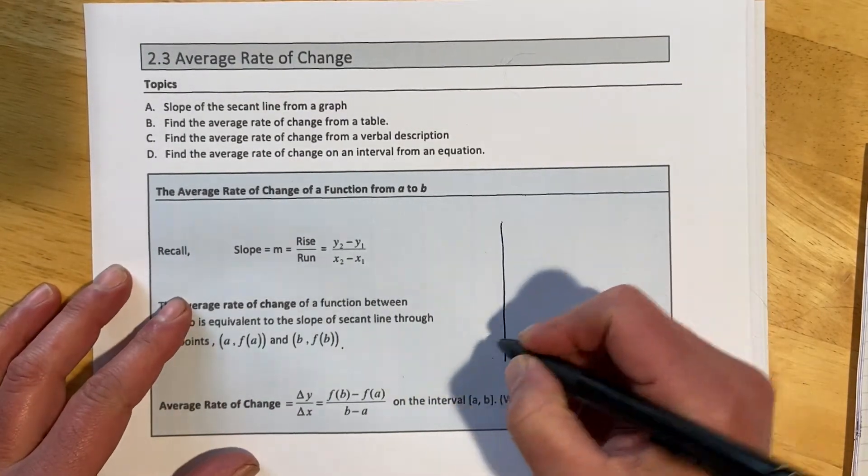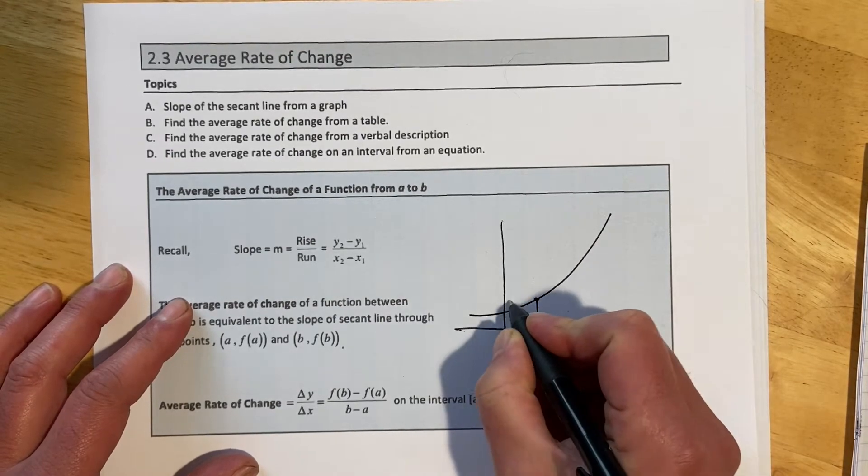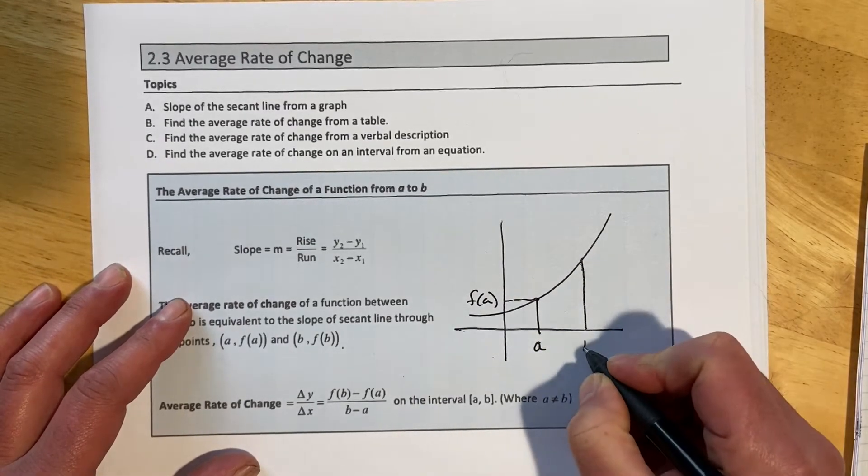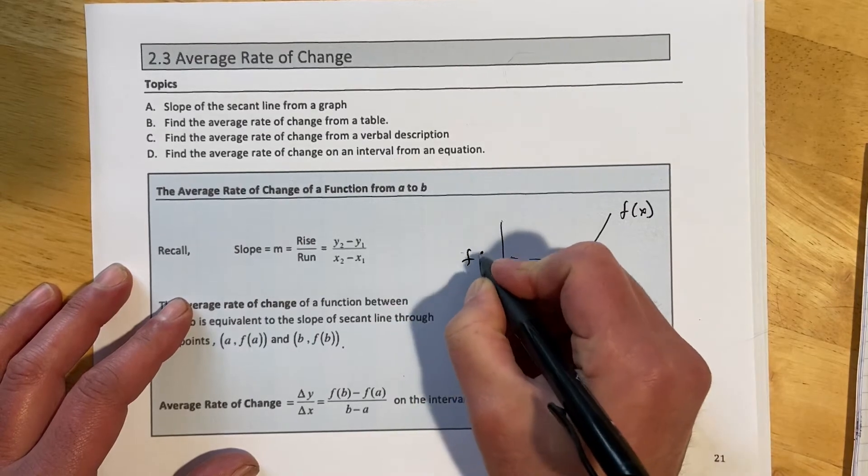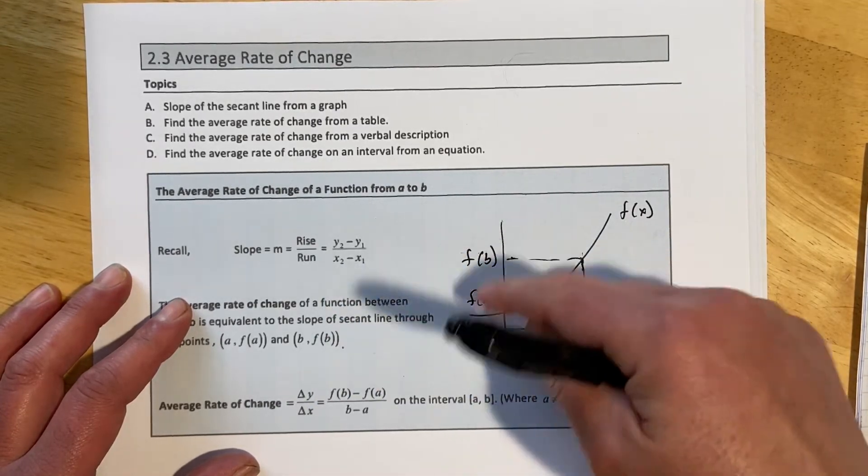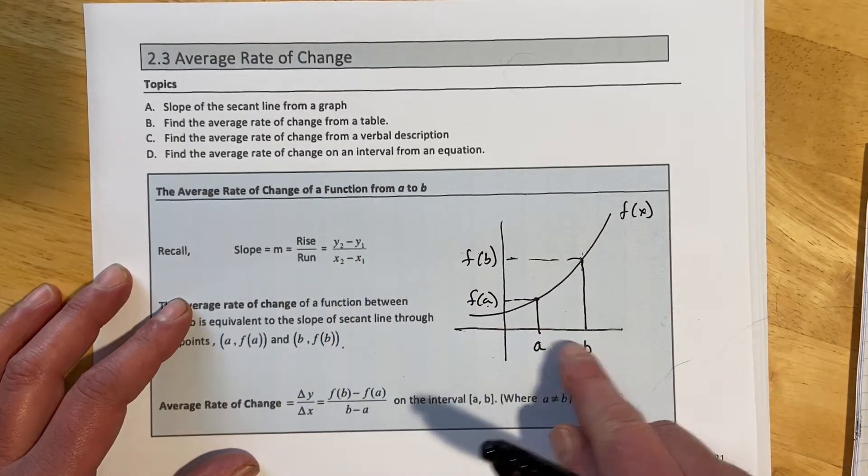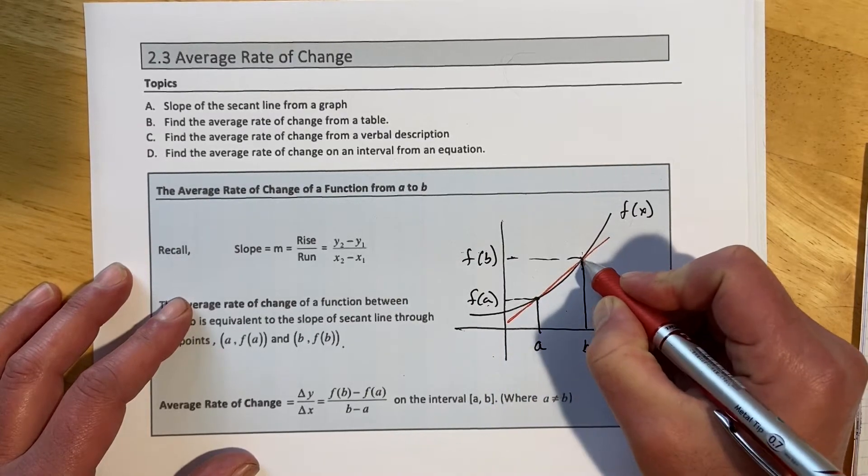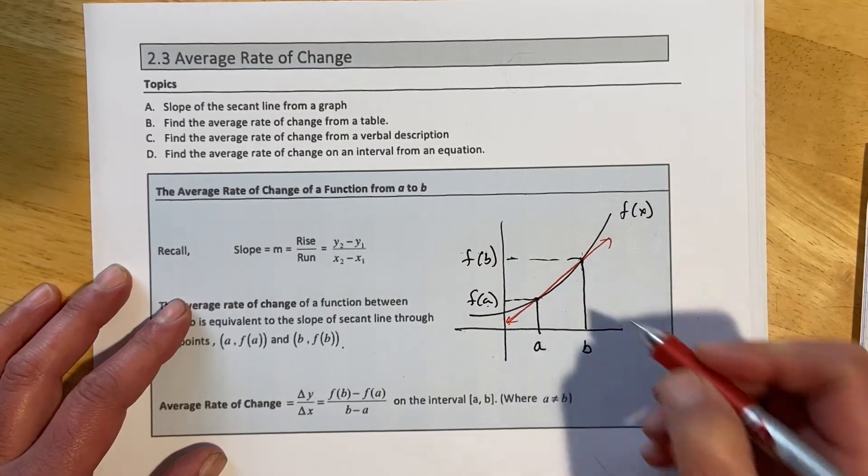Let me just kind of make a quick little sketch of what that could look like. Say I had some point A right here, and I get out some point F of A. And then let's say I have some other point over here, B, and I put that into this function F, and I get out F of B. So then if I go to find my slope, my y2 minus y1 becomes F of B minus F of A. And my x2 minus x1 becomes B minus A. And so what we're doing is we're finding the slope of what's called a secant line when it goes through two points on a curve.